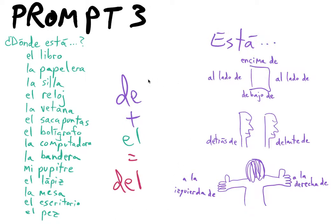Remember, when you're combining the word 'de', which follows most of our prepositions of place — al lado de, debajo de, delante de — when you have that word 'de' followed by the word 'el', such as in el sacapuntas, el lápiz, el pez, you form the word 'del'. It's a contraction.